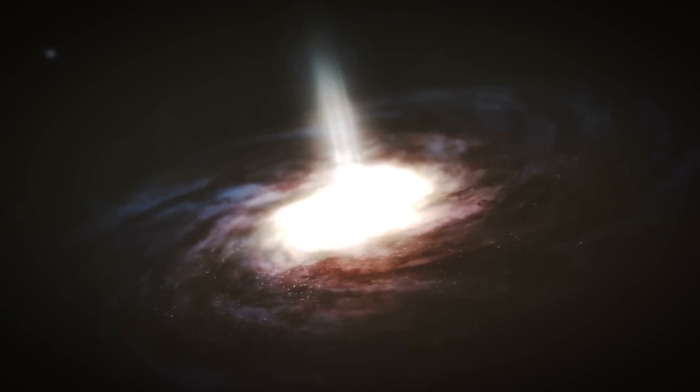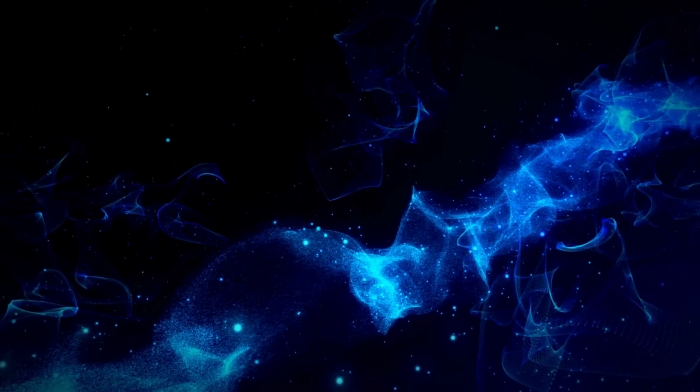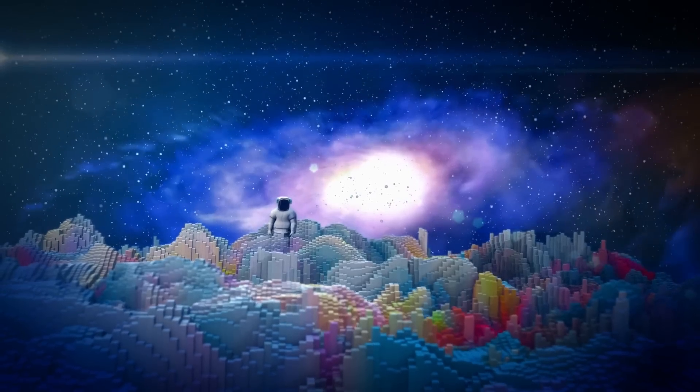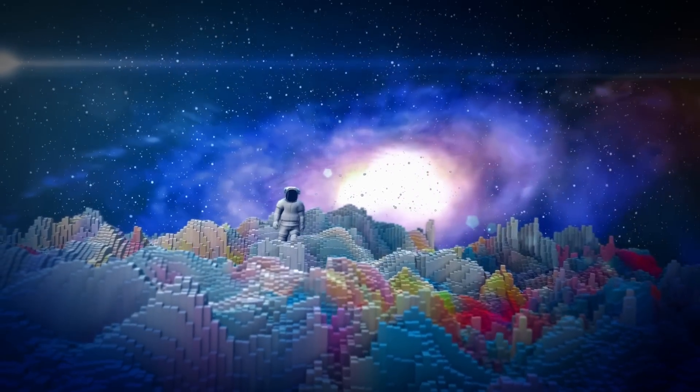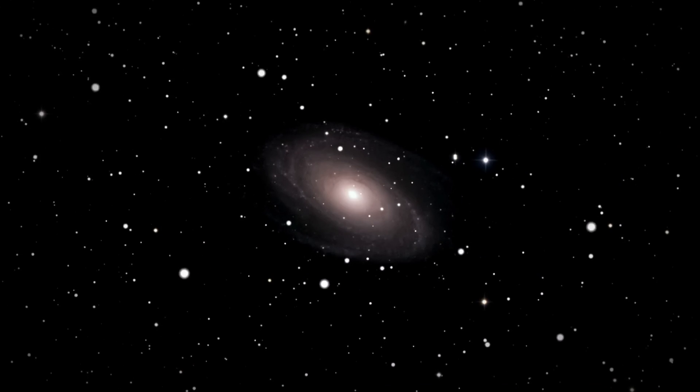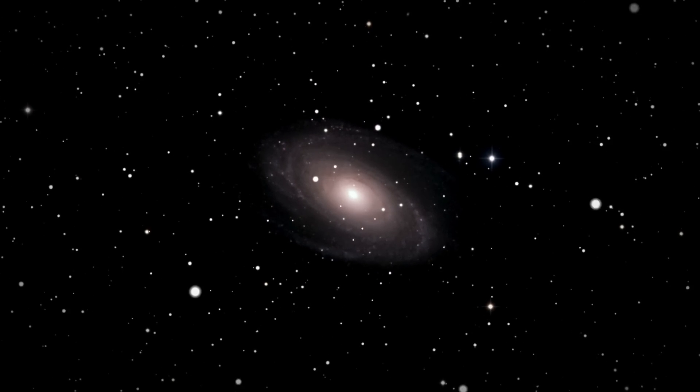Betelgeuse is about 500 times larger than our sun. Its radius is believed to be about 1,000 times that of the sun. It's so big that it appears as a disk in space when using sophisticated telescopes, while other stars appear as little points of light.